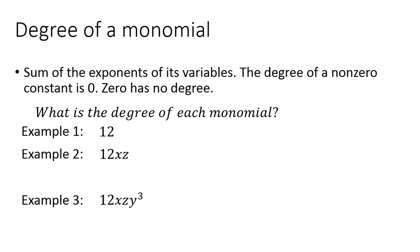Let's look at 12. Since 12 is a constant, it's going to have a degree of 0. In example 2, we have 12xz, so we're going to be looking at the variables x and z. The exponent on x is 1 and the exponent on z is also 1, so to get the degree we're going to be adding 1 and 1, so the degree is going to equal 2.